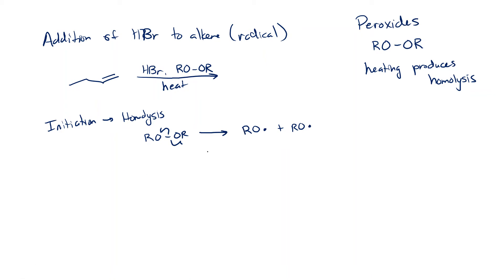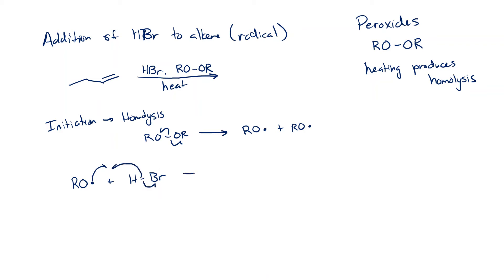What's different is what happens when these radicals react. They're going to react with HBr because HBr is the weaker bond. HBr is not a very strong bond because bromine is very large and hydrogen is very small. So the peroxide radical is going to take the hydrogen away. We make an alcohol and we make the bromine radical.